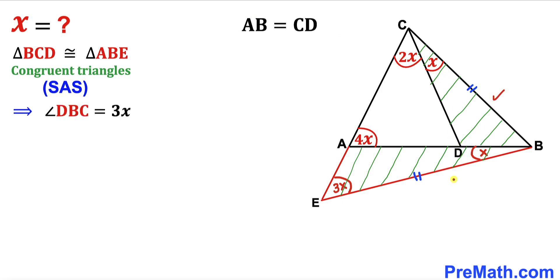Now since these two triangles are congruent, angle DBC has to be 3X.